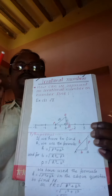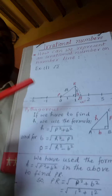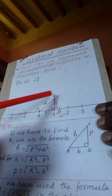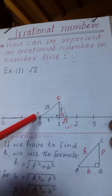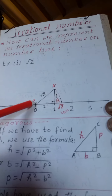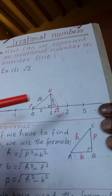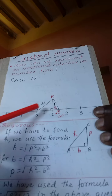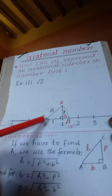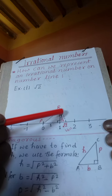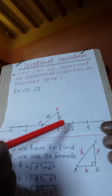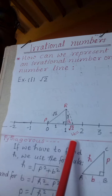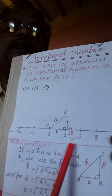Step 4: With P as the center and PR as the radius, we draw an arc which touches point root 2 on the number line. And this is our answer. Clear?